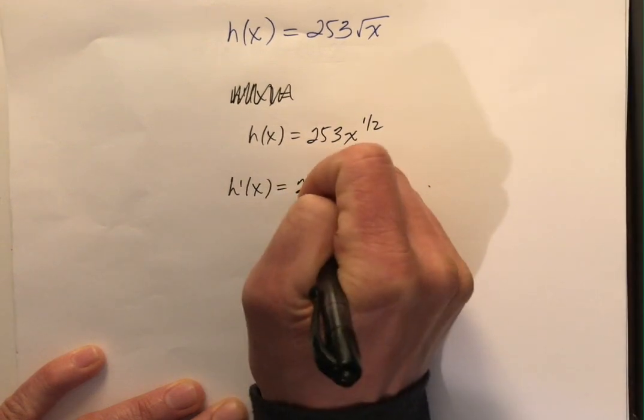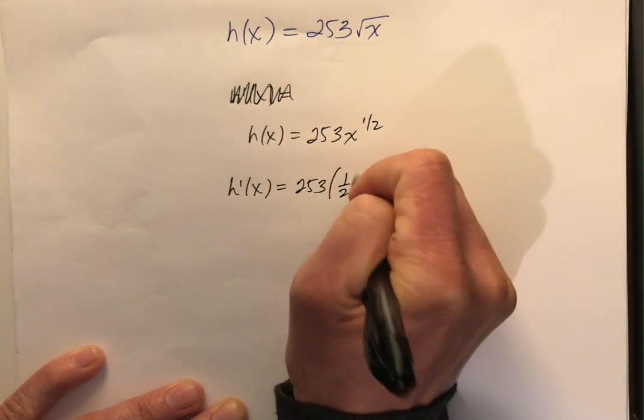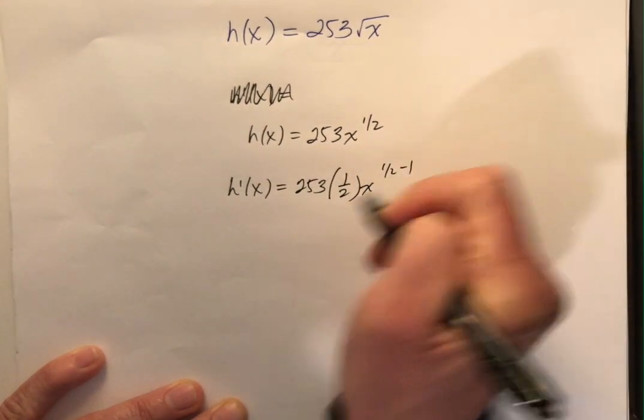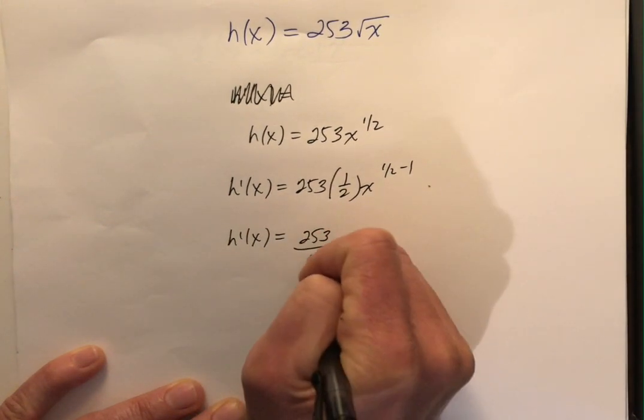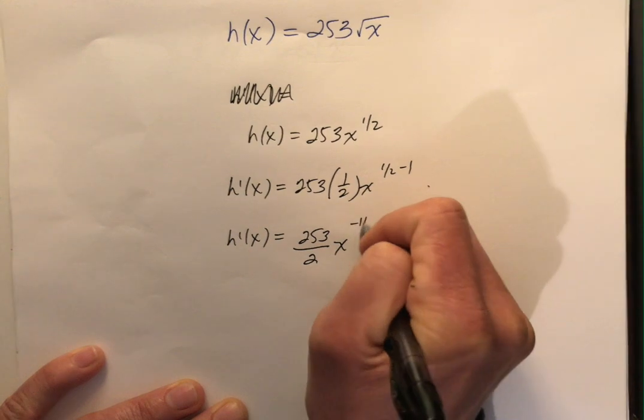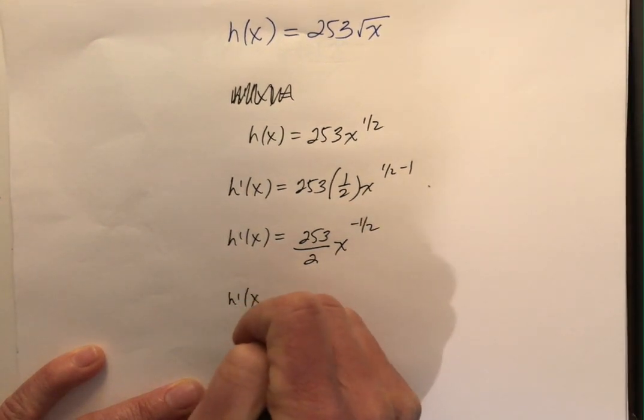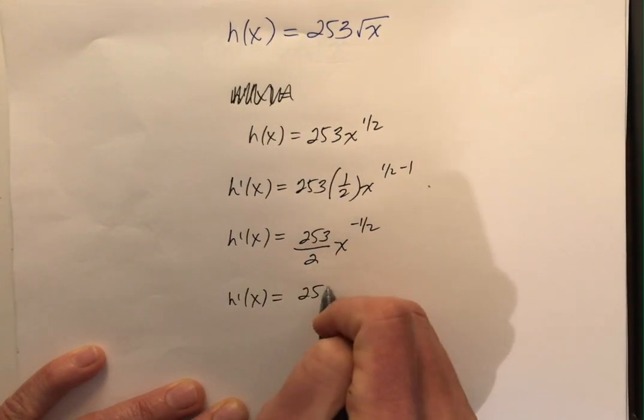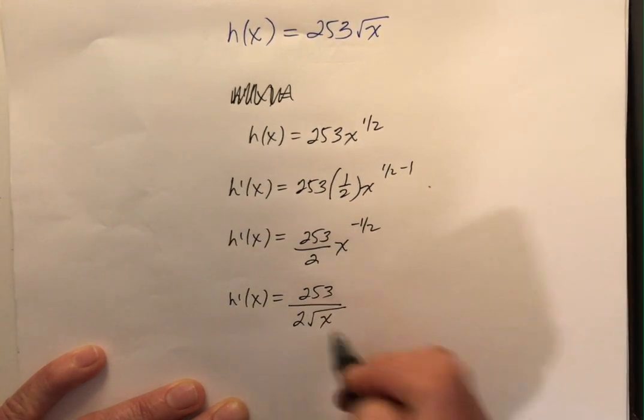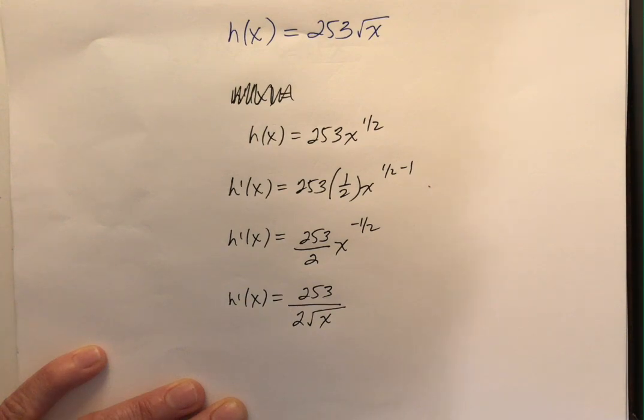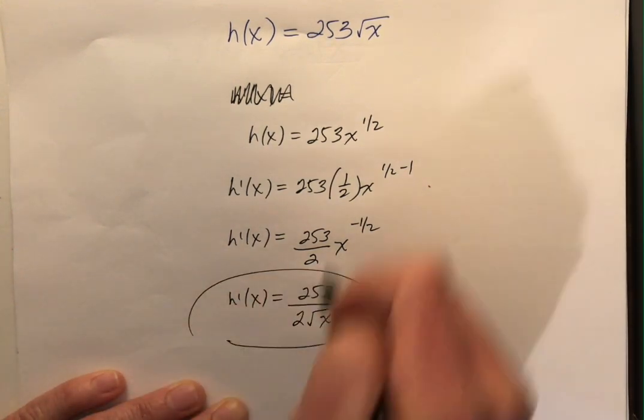So I'm pointing it out because now I've got 253 times the square root of x, which is not a big deal if we rewrite it as h of x as 253 x to the one half. Now let's apply our shortcut. h prime of x is the 253 times the half, x to the one half minus 1, h prime of x, 253 over 2, x to the negative one half.